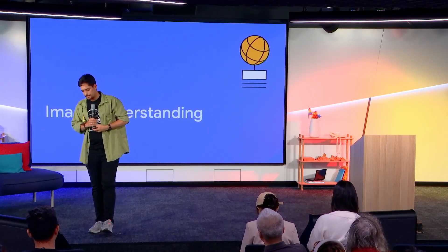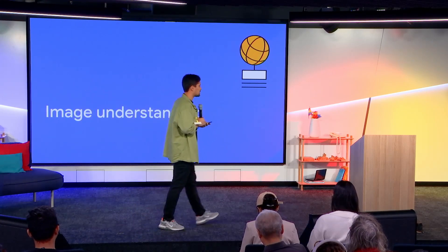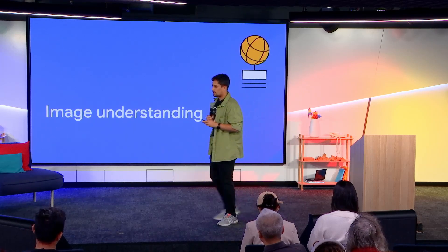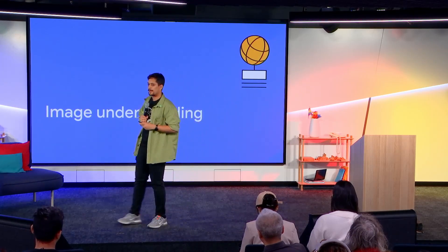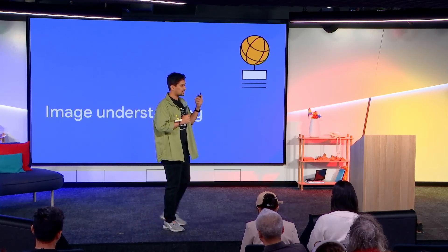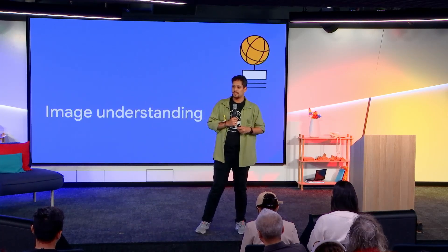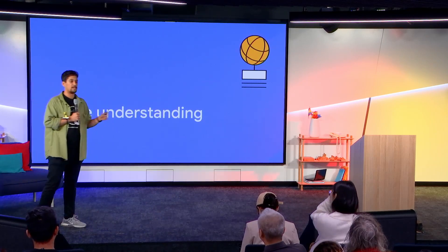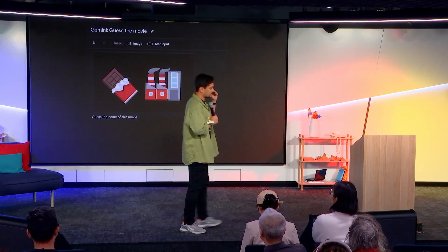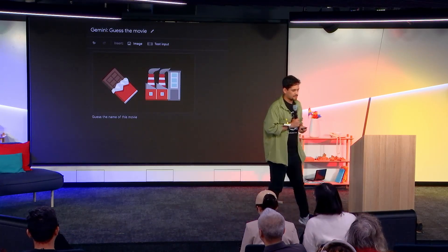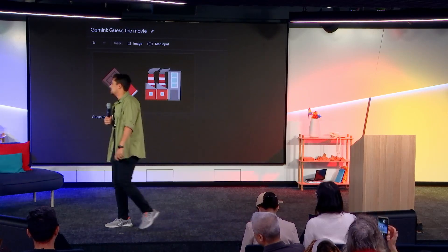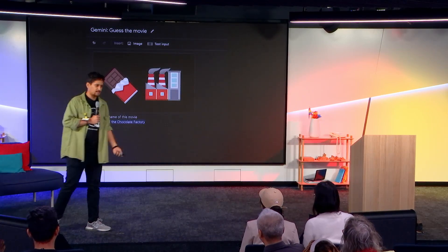Next is image understanding. So far we've focused on textual capabilities; now we'll get into some vision-based stuff. I've got a few questions to ask, and whoever gets the right answer gets some swag — but if you just blur out an answer, nobody gets anything. First question: what movie is this? The answer is Charlie and the Chocolate Factory. This is just two images — one of chocolate and one of a factory — but Gemini knows human culture and understands how a human probably guessed this.